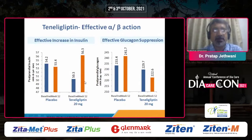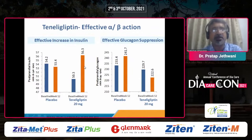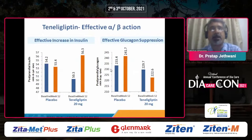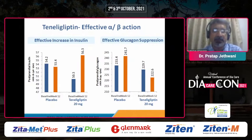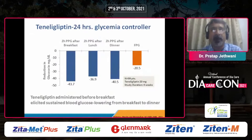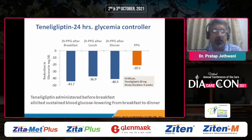Teneligliptin improves insulin secretion — it has a prominent effect on beta cells, as evident from this graph showing post-prandial insulin secretion. Similarly, post-prandial glucagon suppression is the main advantage of gliptins, as they act in a glucose-dependent manner, increasing insulin and suppressing glucagon response to glucose. It provides very good 24-hour glycemia control — whether two hours after breakfast, lunch, or dinner, there is significant reduction not only in fasting but across the day in post-meal glucose.